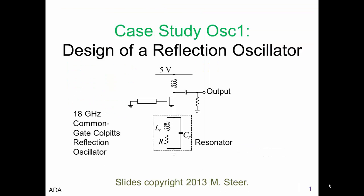This is a common gate Colpitts reflection oscillator that oscillates at 18 gigahertz. Some of the characteristics of this circuit are the use of a transmission line in the base, and the use of a resonator which looks like a capacitor at the oscillation frequency, but it is a resonator at a much lower frequency. Therefore, it is not an ordinary capacitor at our oscillation frequency, and we'll see why we use that later on.